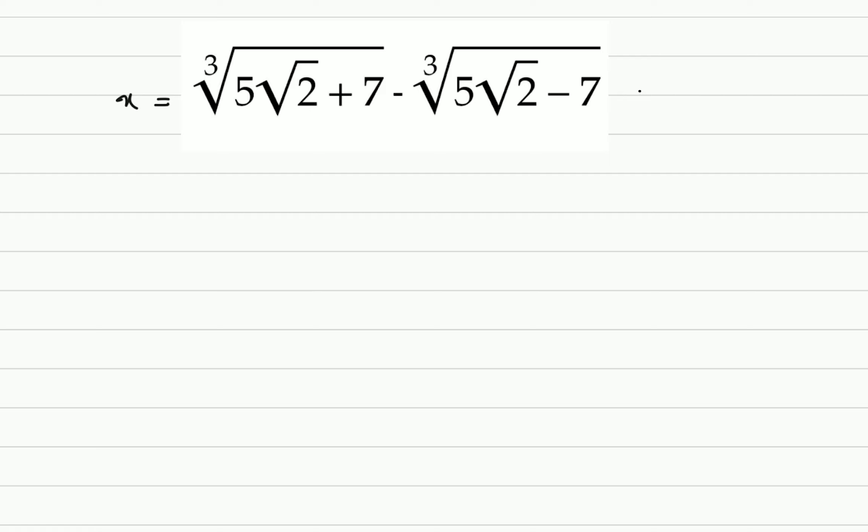Okay, and we can also call this one a minus b. This one is a, and this one is b. So, x cube is a cube minus b cube minus 3 times a squared b plus 3 times a b squared. And we can also write the second part as, let's say, minus 3 times a b multiplied by a minus b.